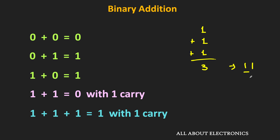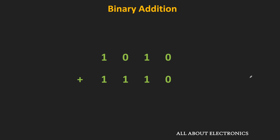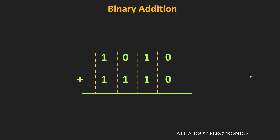Let's say we want to add two binary numbers. As mentioned, we will do the column by column addition, and similar to the decimal number system, we will start from the rightmost column. In the rightmost column, we have 0 plus 0, which is equal to 0. Similarly, if we move to the next column, then we have two 1s. As we have seen, 1 plus 1 is equal to 0 with 1 as a carry to the next column.